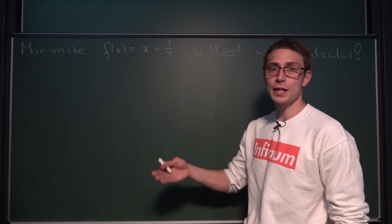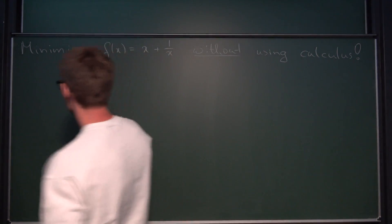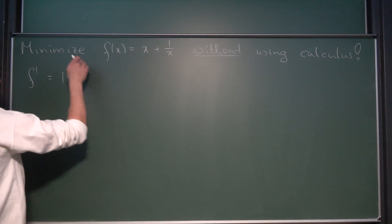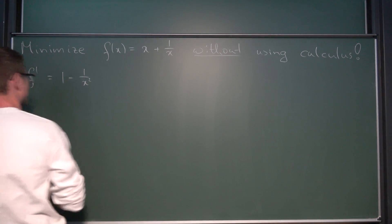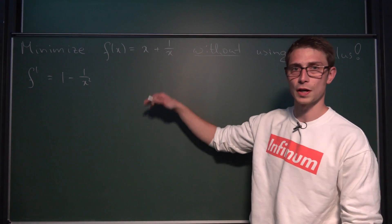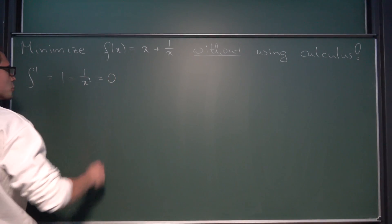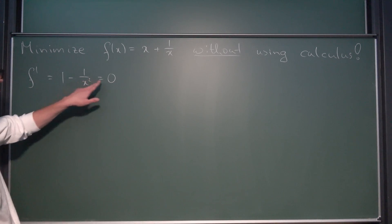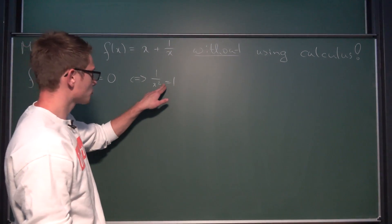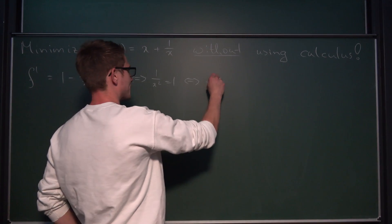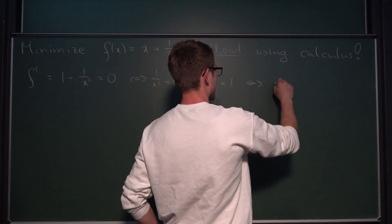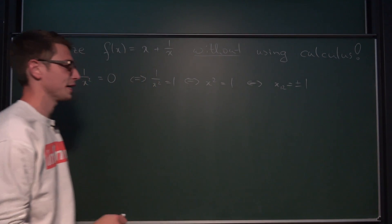So since we have a function defined, how do we find a minimum? We first differentiate: f'(x) = 1 − 1/x². We want to find the zeros of the derivative in order to find the minimum or maximum value of the original function. Setting this equal to zero, we add 1/x² to both sides, giving us 1/x² = 1. Multiplying both sides by x² gives x² = 1, and taking the square root gives x = ±1.